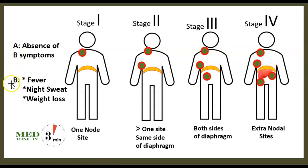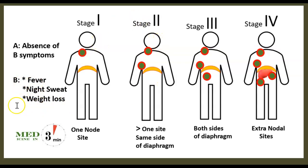Each stage can be classified as either A or B. A means the absence of B symptoms — which are fever, night sweats, and weight loss. B means the patient has one or more of these symptoms. For example, Stage 1A means the patient has adenopathy but no fever, night sweats, or weight loss. Stage 2B means nodules on both sides above the diaphragm and the presence of those systemic symptoms.